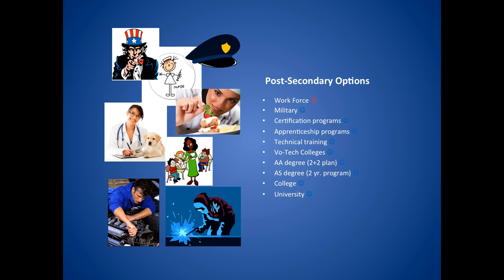We know not all students are planning to go into a college program, but there are lots of different post-secondary options available to you: the workforce, the military, certification programs such as the ones at First Coast Technical College, apprenticeship programs, technical training, VoTech programs, the AA degree, the AS degree, traditional colleges where you can earn a four-year bachelor's degree, and of course the universities. Those are just some of the options available to you to start thinking about as you approach graduation.